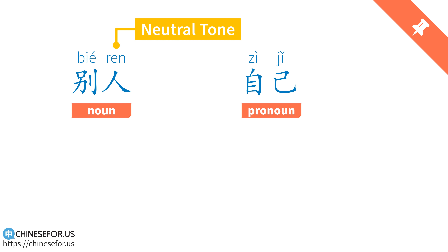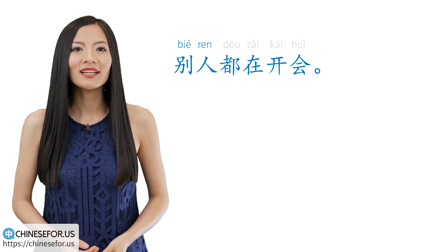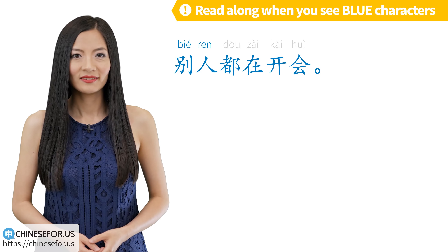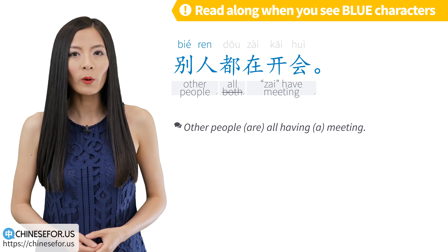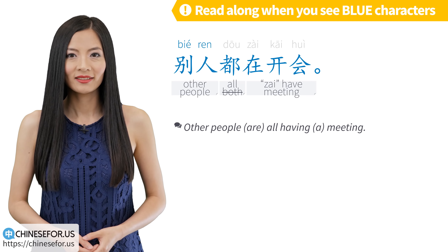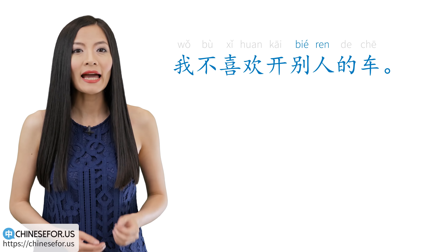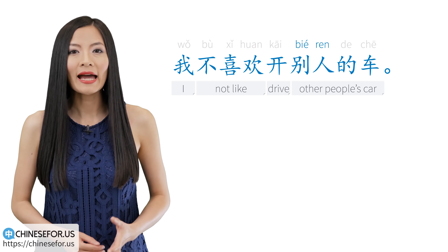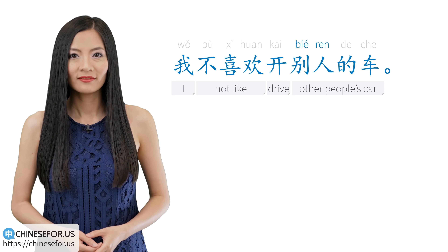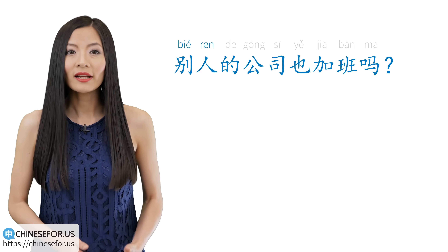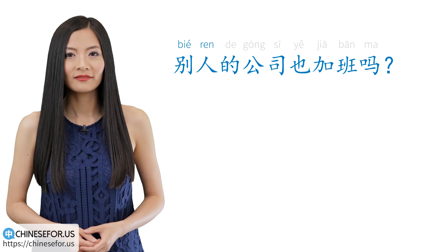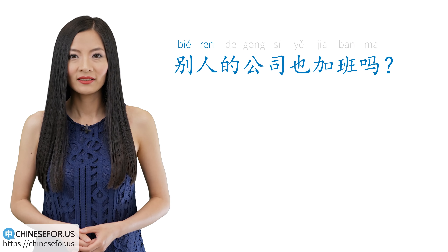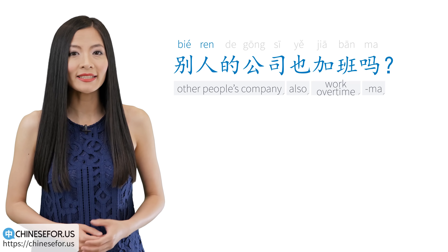别人。 人 is in the neutral tone, 别人。 自己。 Here are some example sentences: 别人都在开会。 别人都在开会。 我不喜欢开别人的车。 别人的公司也加班吗？